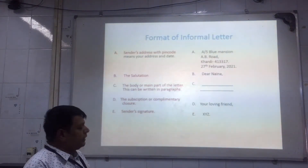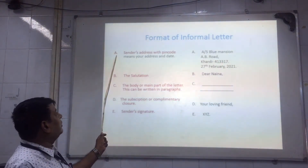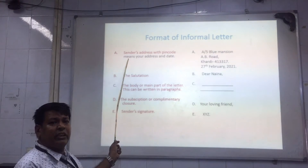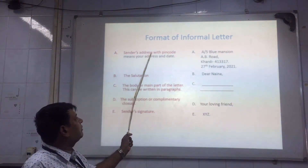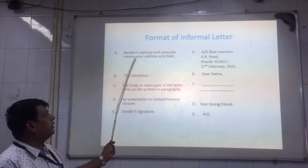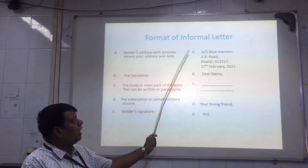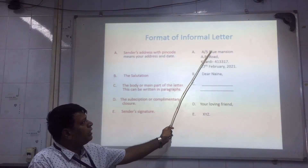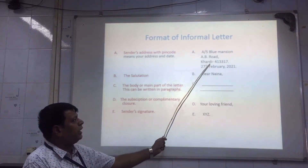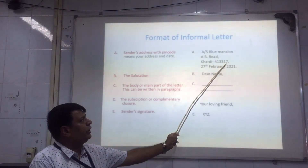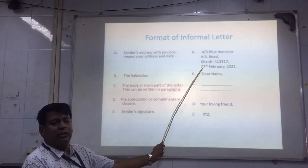The first part — Part A — on the left side, you write your sender's address with the pin code. For example: A5, AB Road, Hardy, 413317.